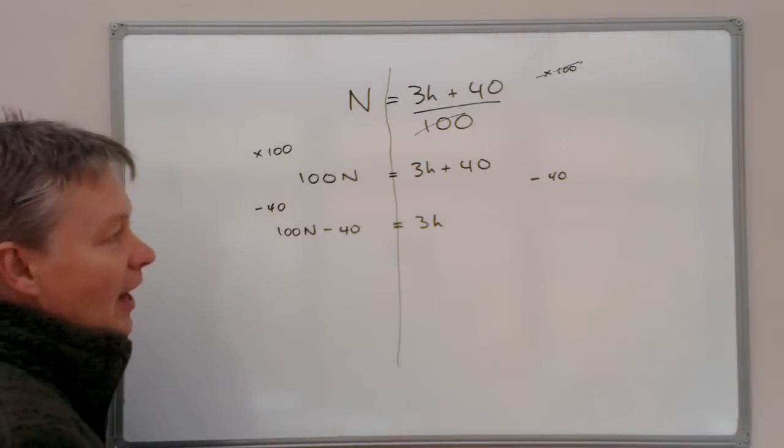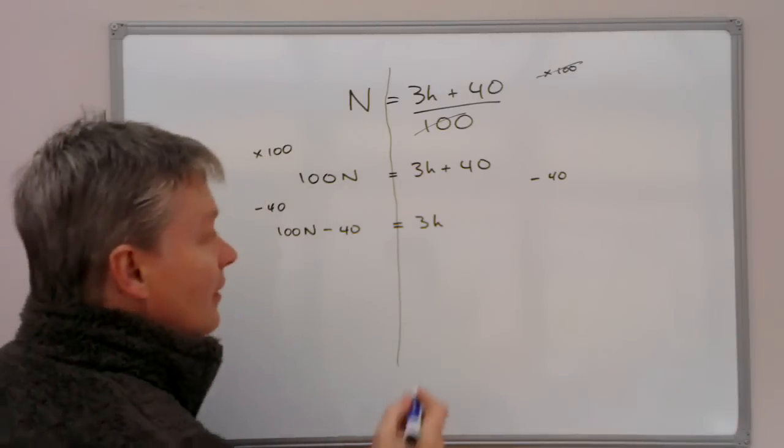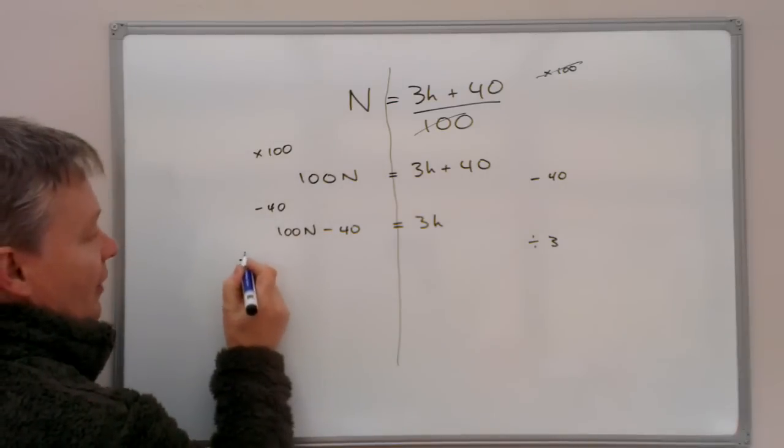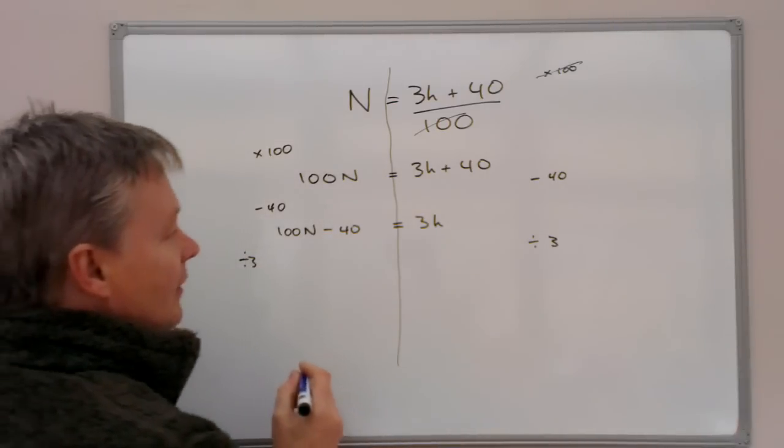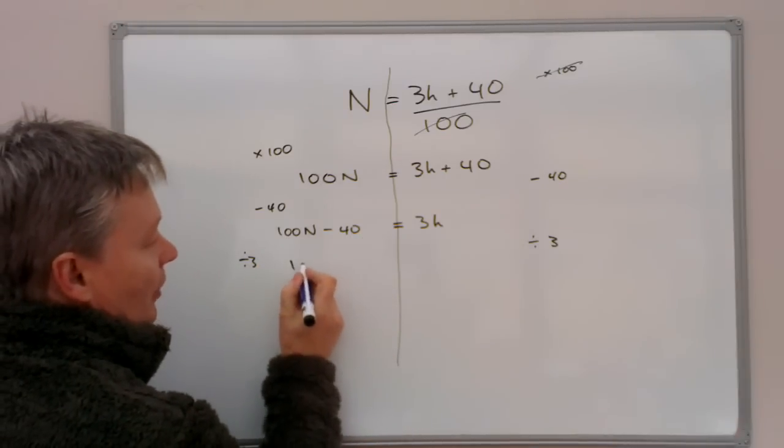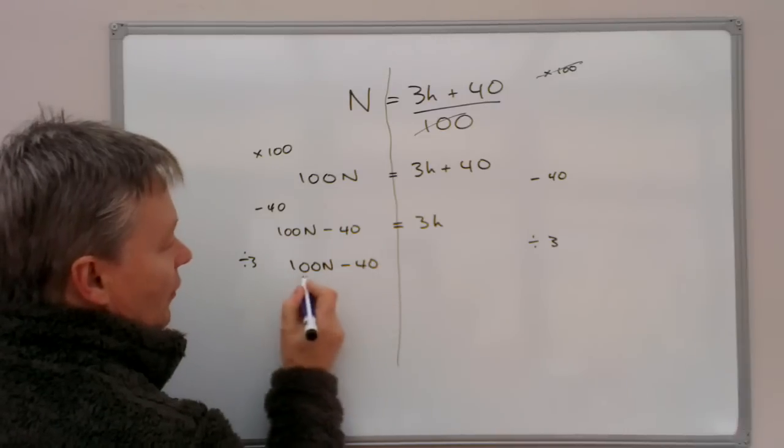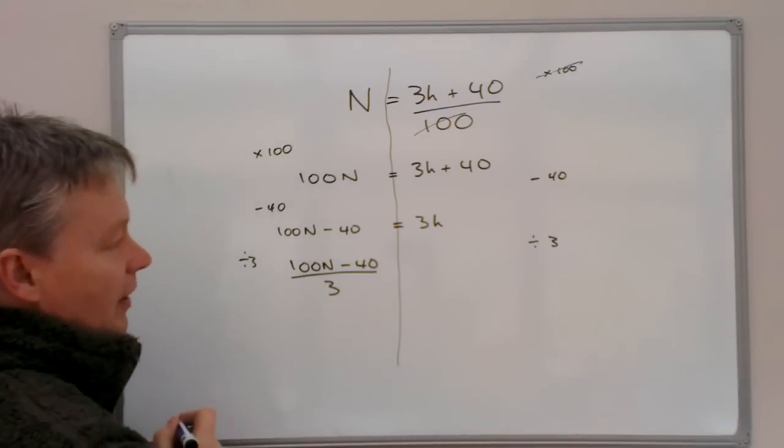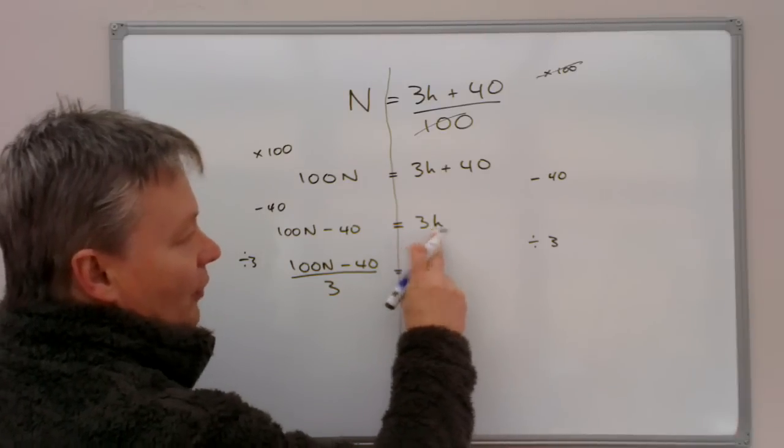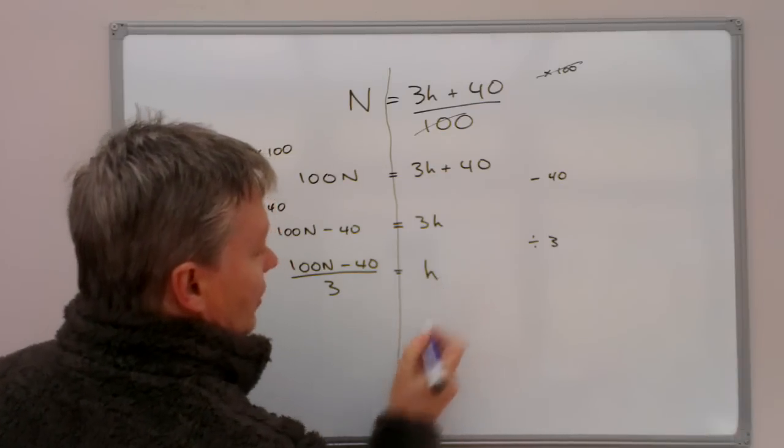So what I'm going to do then is I'm going to divide both sides by 3. So if I divide that side by 3, I have to divide this side by 3. If I divide this side by 3, I'm going to come up with an equation which is 100N minus 40, all divided by 3. That equals 3H divided by 3, which is H on its own.